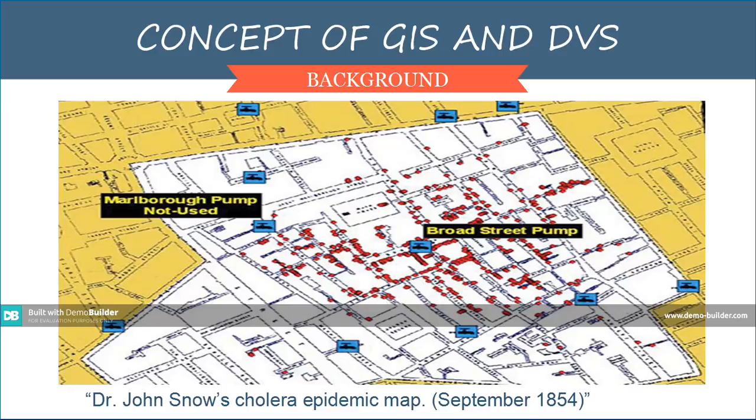He also marked the locations of water pumps in the vicinity. Based on his study, it was found that the cholera victims all lived near and drank from the Broad Street water pump. The handle of the pump was then removed, which ended the cholera epidemic.